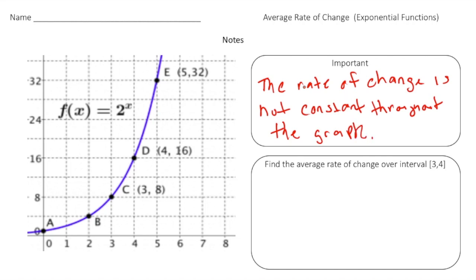Let me show you what I'm talking about. Take a look at point A and point B — the slope between here and here is going to be roughly this line. But if I wanted to see the slope between point C and point E, the slope of that would be much steeper than the red line. So for exponential functions, the slope is constantly changing as you progress across the graph.